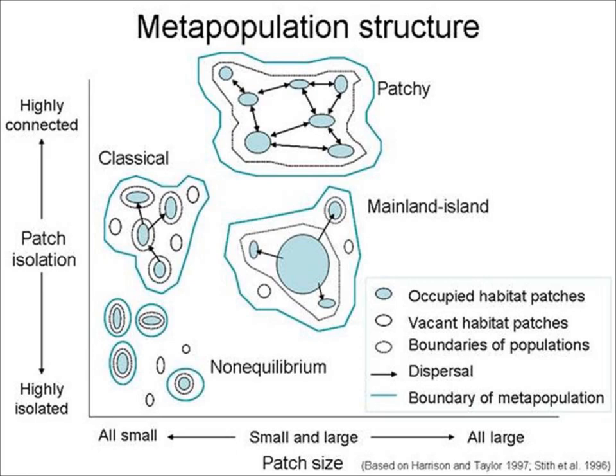Metapopulations consist of a group of spatially spread out populations of the same species that interact with each other at some level. These metapopulations are generally made up of several distinct populations together with spaces of suitable habitats that currently have an unoccupied niche. Population cycles within the individual populations are independent and eventually become extinct due to demographic events, and usually the smaller the population, the higher the risk of inbreeding and extinction.